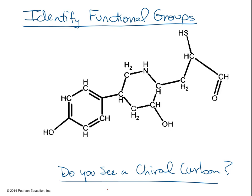So what do you see first? A phenol. So the first thing to do is look for the six-membered ring with the alternating single and double bonds. That's either a phenol or an aromatic. It's an aromatic if there's no alcohol attached. It's a phenol if there is. So this is a phenol.